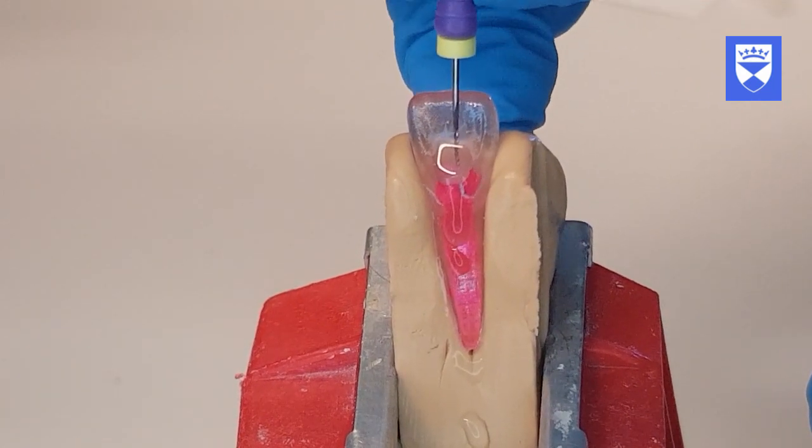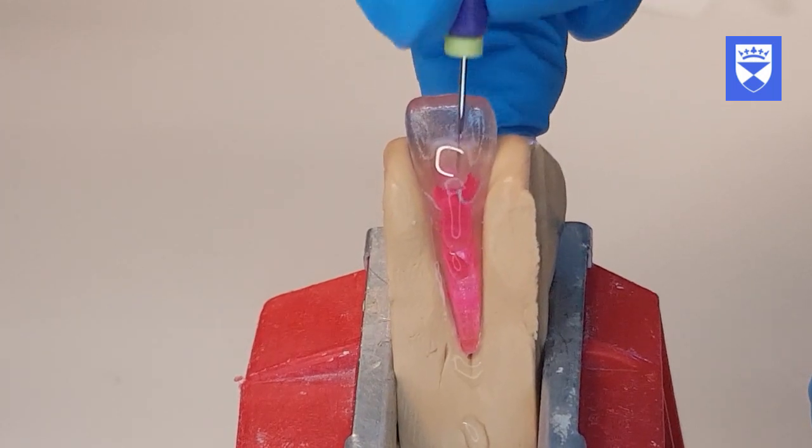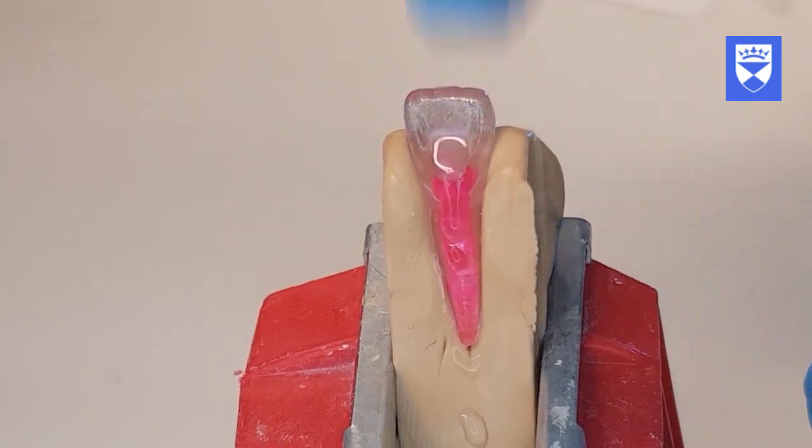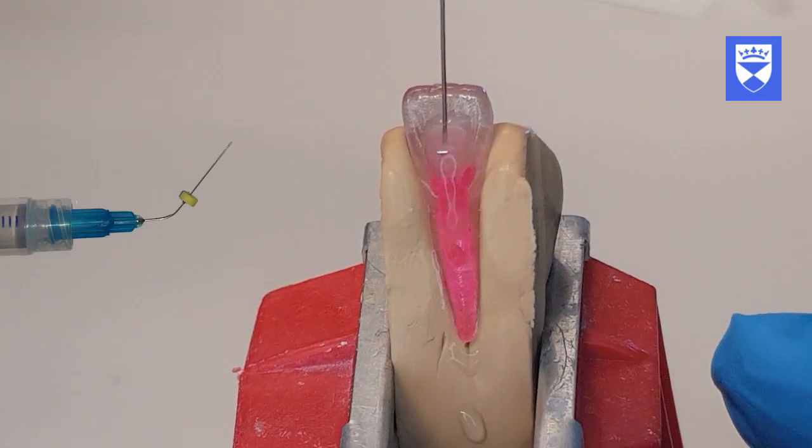The file should then be used to confirm the apical patency. Perform small push-pull movements with the flexor file until the size 10 flexor file feels super loose in the canal. Irrigate with three milliliters of sodium hypochlorite solution.